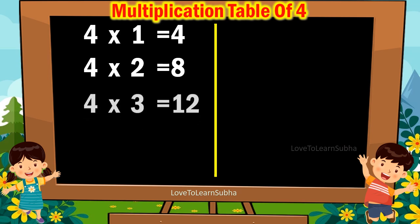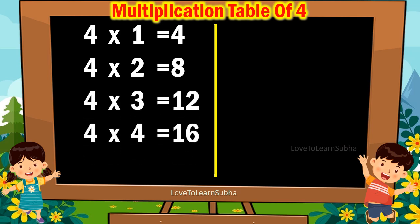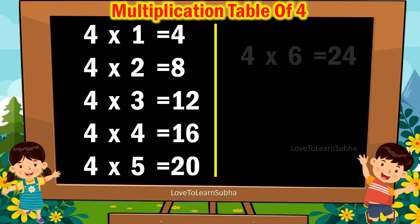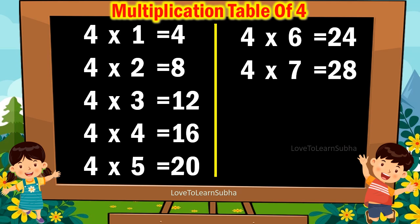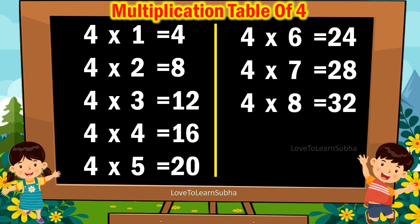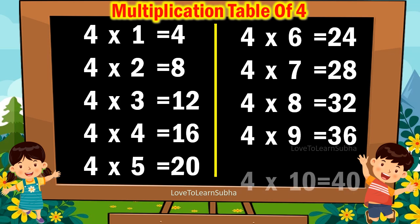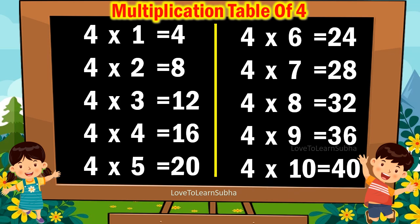3 9s are 27, 3 10s are 30. 4 4s are 16, 4 5s are 20, 4 6s are 24, 4 7s are 28, 4 8s are 32, 4 9s are 36, 4 10s are 40.